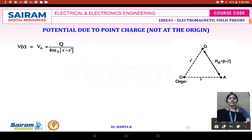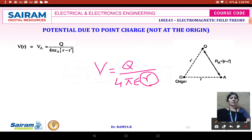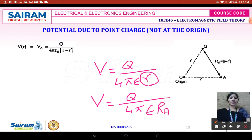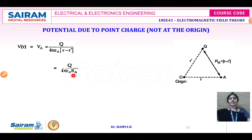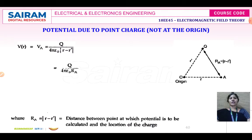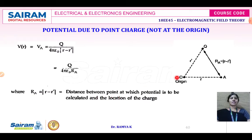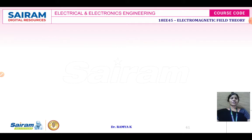We know that the potential V is equal to Q divided by 4πε·r, where r is the distance between the cause and effect. So V equals Q divided by 4πε·|R_A|, where R_A represents the magnitude of the distance between the point charge and the point under consideration where we want to identify the potential.